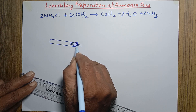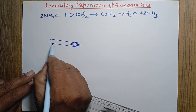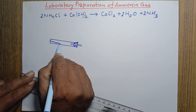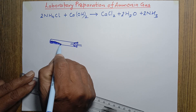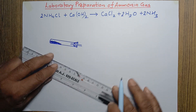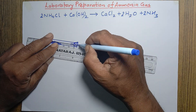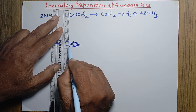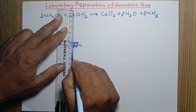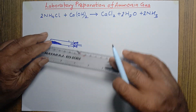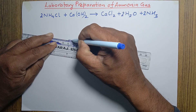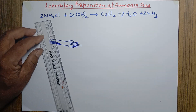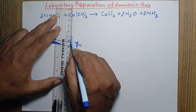This is how we draw the hard glass test tube. The mixture of ammonium chloride and calcium hydroxide is taken in the hard glass test tube. This hard glass test tube should be clamped with the help of a clamp and made upright with the help of a stand — this is the clamp stand.